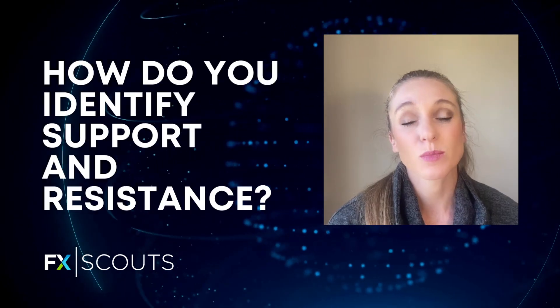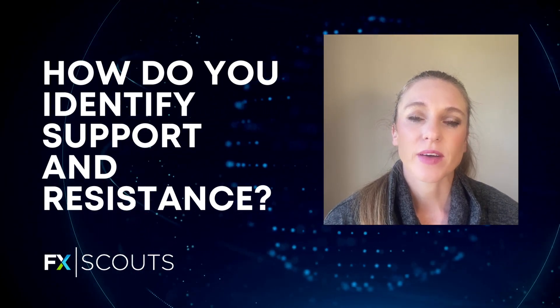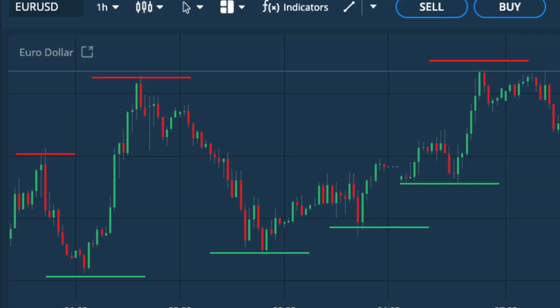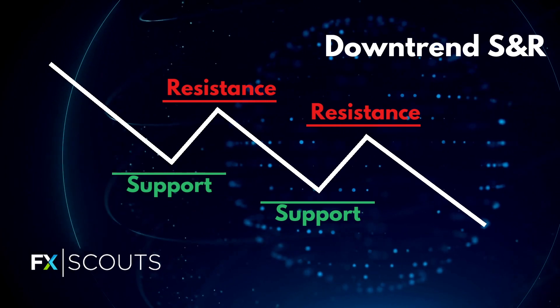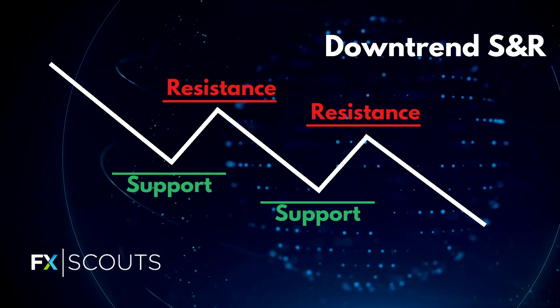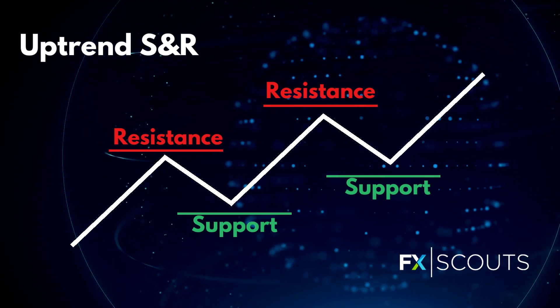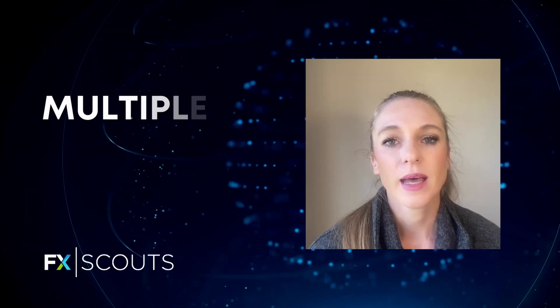How do you identify support and resistance? There are a few ways to do this on the charts. Firstly, you want to identify the peaks and the troughs. To draw your support and resistance using peaks and troughs, you would select your time frame, then identify the highest peak on that chart and do the same with the lowest point. You will mark each peak and each trough. If there is a downtrend, the support level will be below a low peak and the resistance will be below a high peak. Conversely, if there's an upward trend, the support level will be the higher low peak and the resistance level will be the higher high peak.